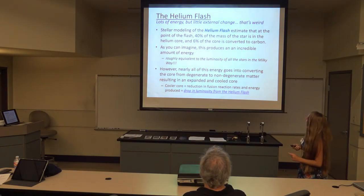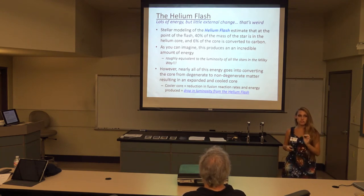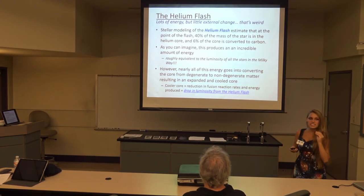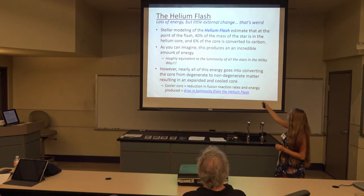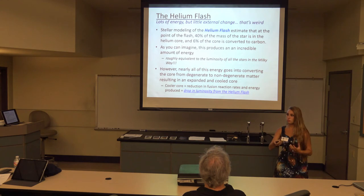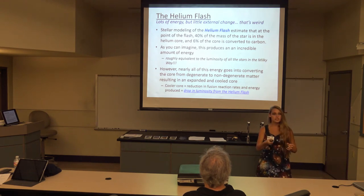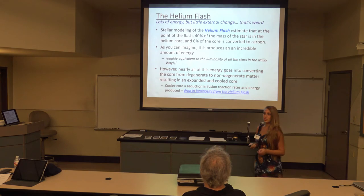Stellar modeling of the helium flash estimated that at the point of the flash, 40% of the mass of the star was concentrated in that little helium core, and 6% of the core was converted to carbon instantaneously. This produces energy roughly equivalent to the luminosity of all stars in the Milky Way at once. However, nearly all of this energy goes into converting the core from degenerate to non-degenerate matter, resulting in an expanded and cooled core — similar to how holding your hand on a cup of ice doesn't change the temperature because all the energy goes into changing the state of matter.